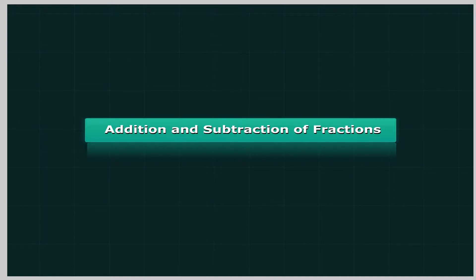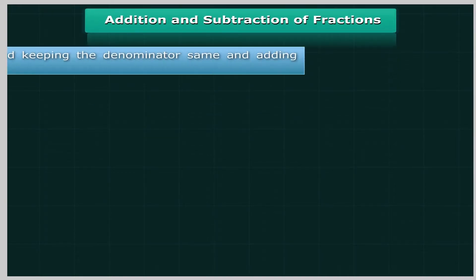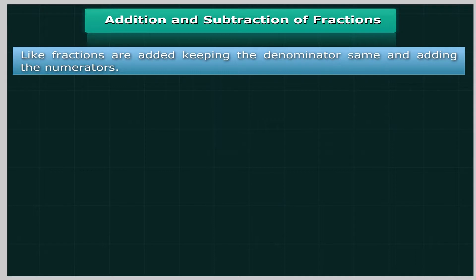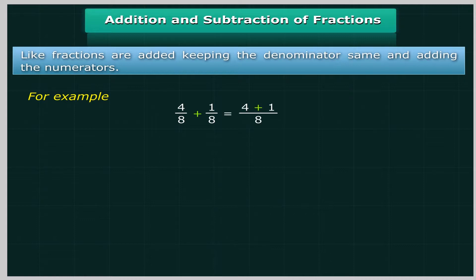Addition and Subtraction of Fractions: Like fractions are added by keeping the denominator the same and adding the numerators. For example, 4 upon 8 plus 1 upon 8 is equal to (4 plus 1) upon 8, which equals 5 upon 8.